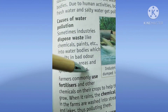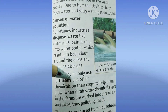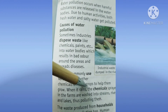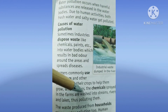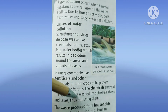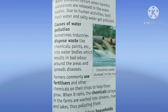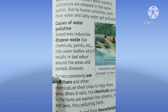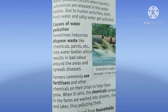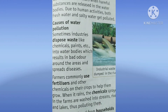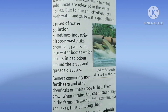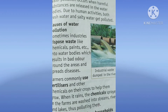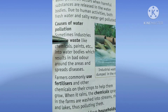Farmers commonly use fertilizers and other chemicals on their crops to help them grow. When it rains, the chemicals spread in the farms are washed into streams, rivers and lakes, thus polluting them. So this is another reason — fertilizers jo farmer use karte hain, plants mein crops bhi dalte hain. Phe jab rain hoota hai toh woh chemicals beh jaate hain and they go and mix into the streams, rivers and lakes.